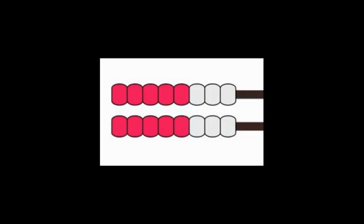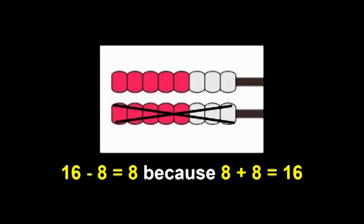Here's another. How many did you see? How many on the top? How many on the bottom? How many altogether? Take away eight — take away the bottom row. I bet you already know it's eight. 16 take away eight equals eight.